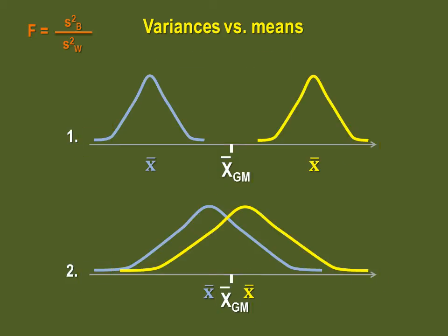The between-group variance is quite different, though. You can see in the first case that there is a certain distance between the sample means and the grand mean, versus in the second case, that difference is much, much smaller.